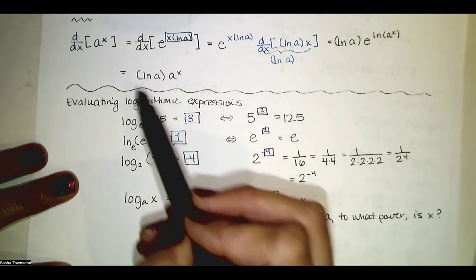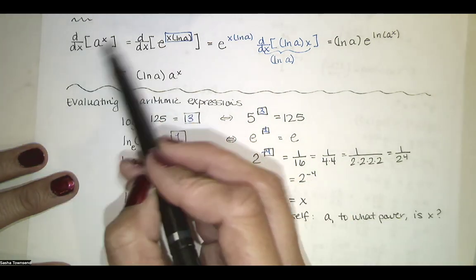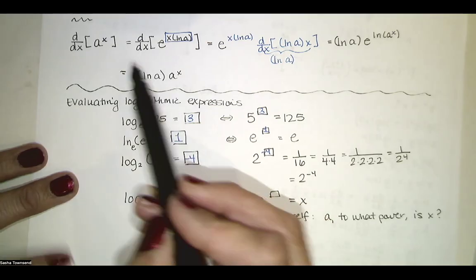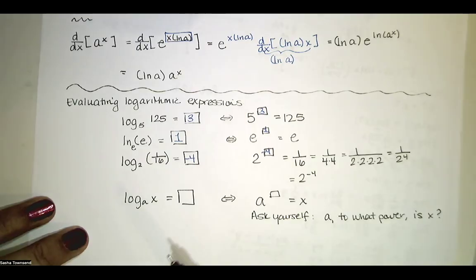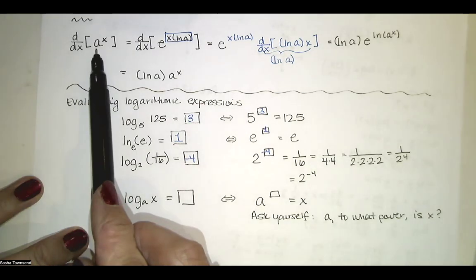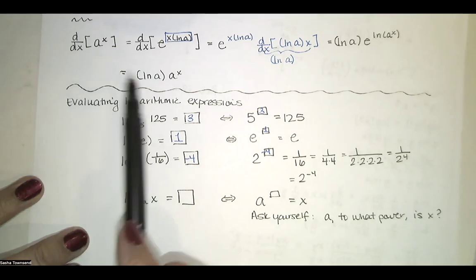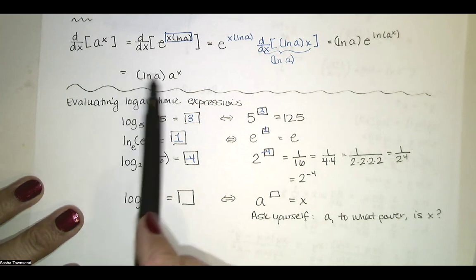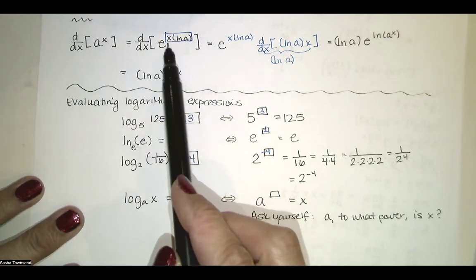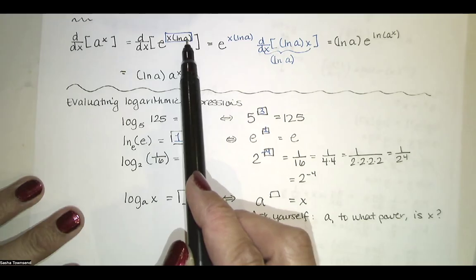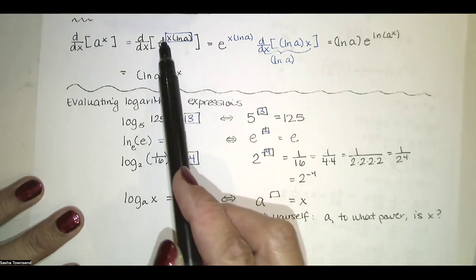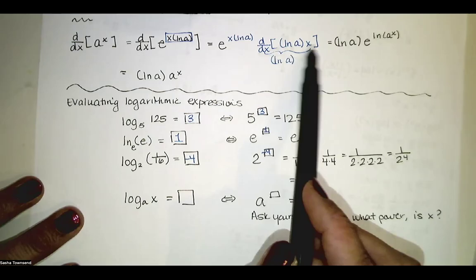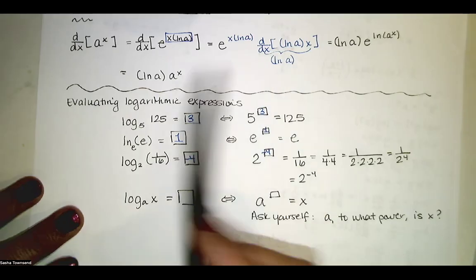Applying the rule to e to the x: the derivative of e to the x is e to the x times natural log of e, but natural log of e is one. So the derivative and the function are the same. If the base is anything other than e, we multiply by that extra factor of natural log of a. The reason is that a to the x equals e to the natural log of a times x, and using the chain rule, the derivative of the inside is the constant natural log of a.